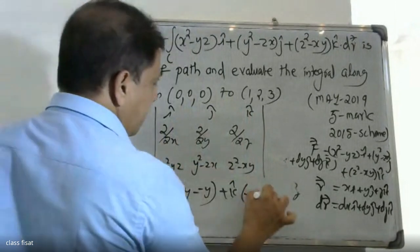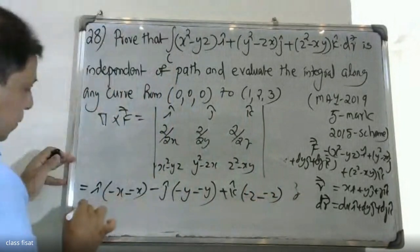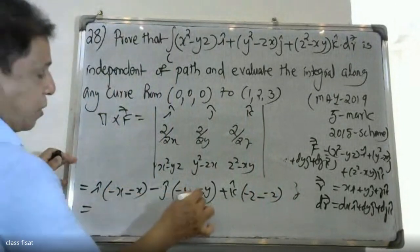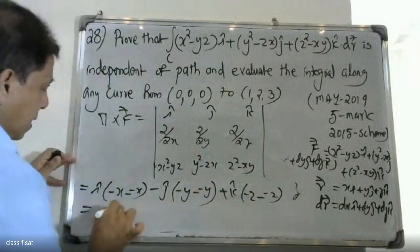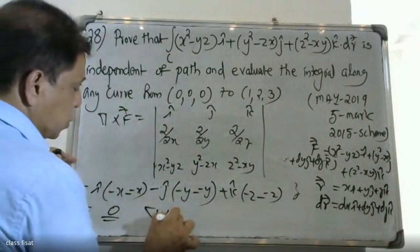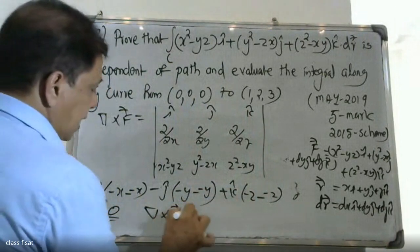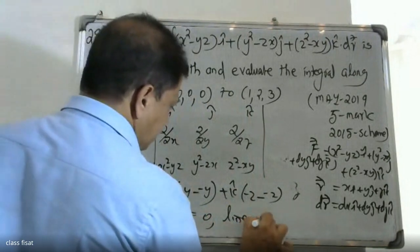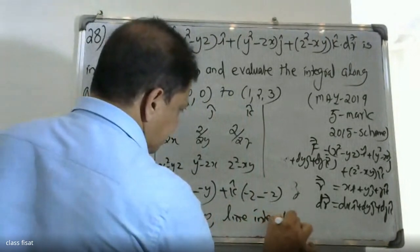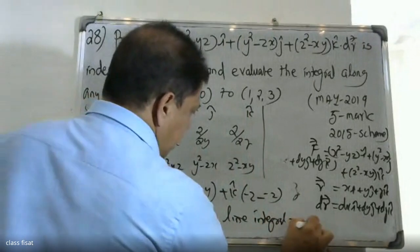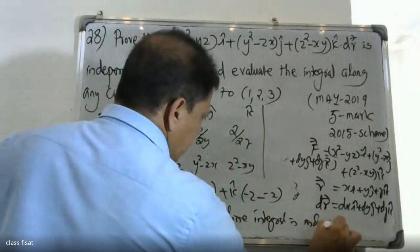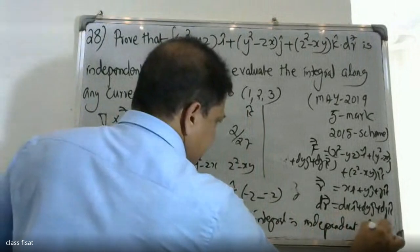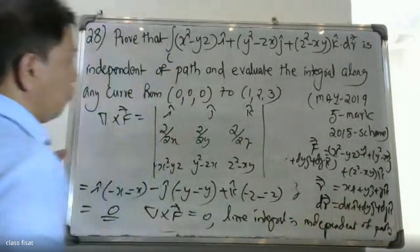Each component gives minus x plus x, minus y plus y, minus x plus x, all equal to zero. Therefore del cross F equals zero, and the line integral is independent of path.